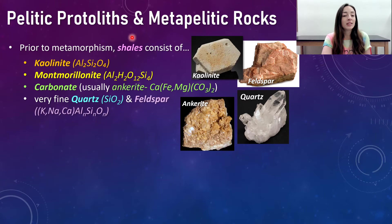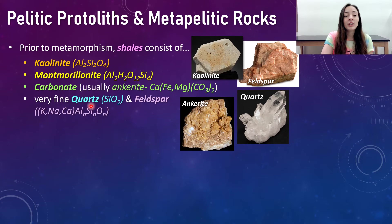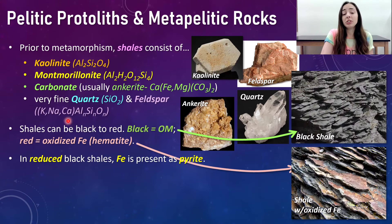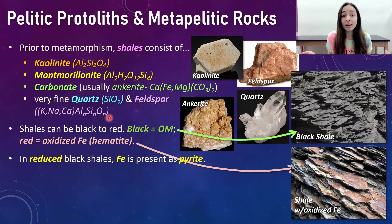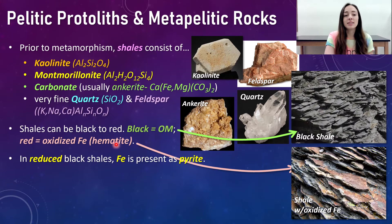Prior to metamorphism, shale consists of minerals like kaolinite and montmorillonite — those are clay minerals — then also carbonate minerals, sometimes usually ankerite, and often very fine-grained quartz and feldspar. If you've ever seen shale, you've probably noticed that it either has a very black color or a red tinge to it. The black is due to organic matter, and the red is due to oxidized iron or hematite, which is a mineral that contains oxidized iron.